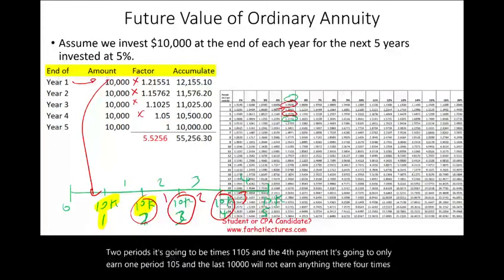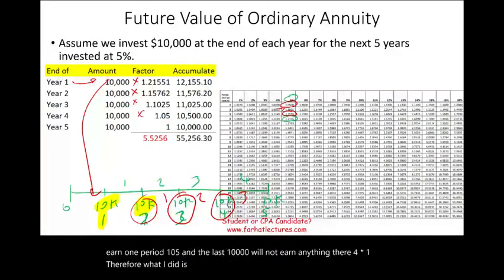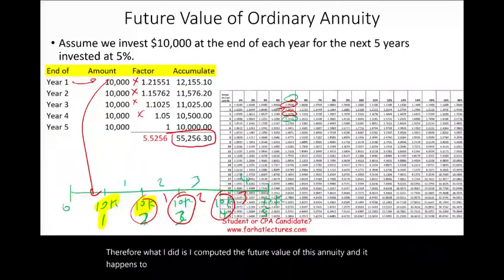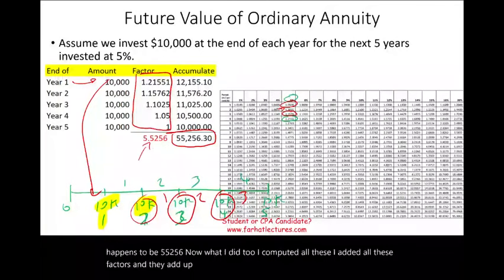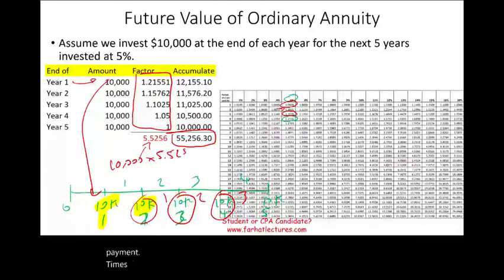I computed the future value of this annuity, and it happens to be $55,256. What I also did is add all these factors — they add up to 5.5256. So if I take the payment times 5.5256, I can get to $55,256. This is how much my investment is worth.